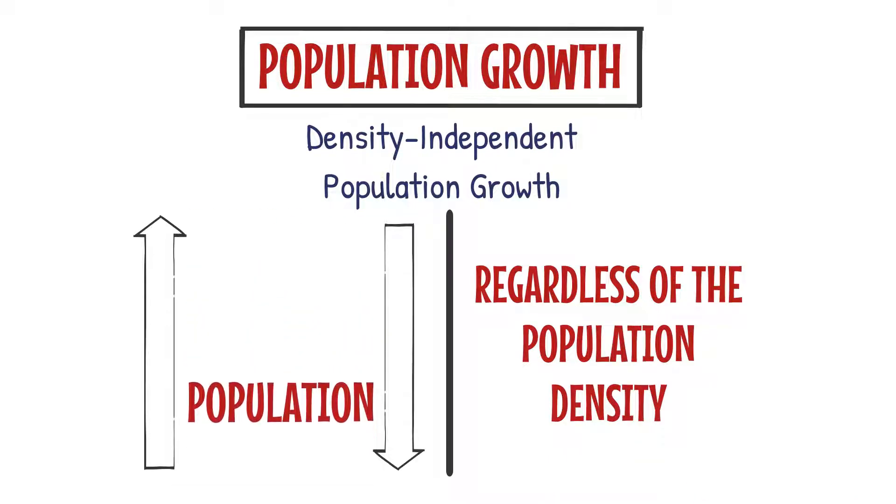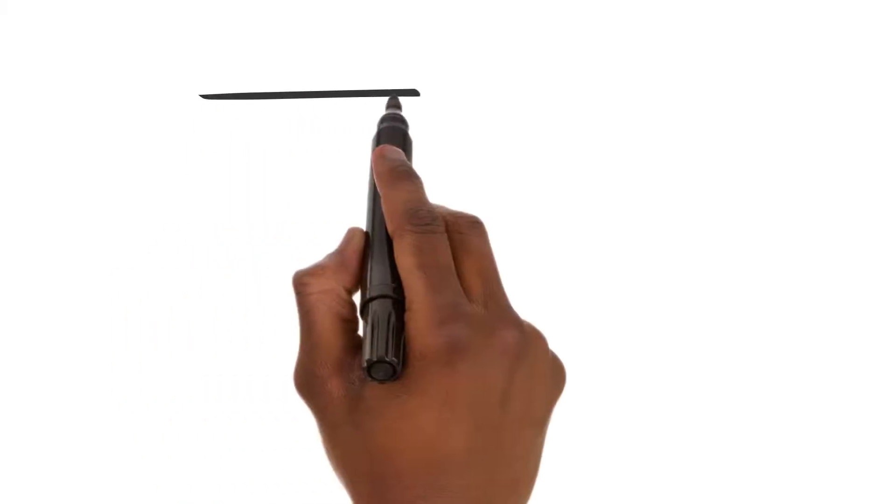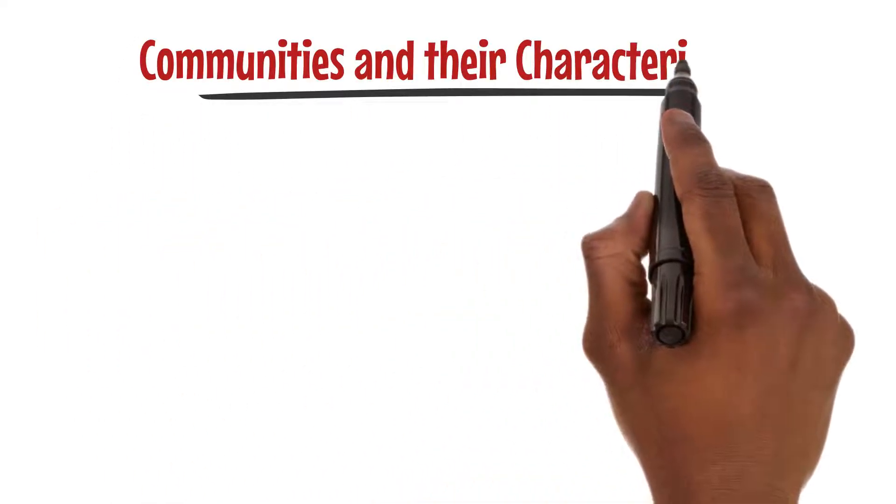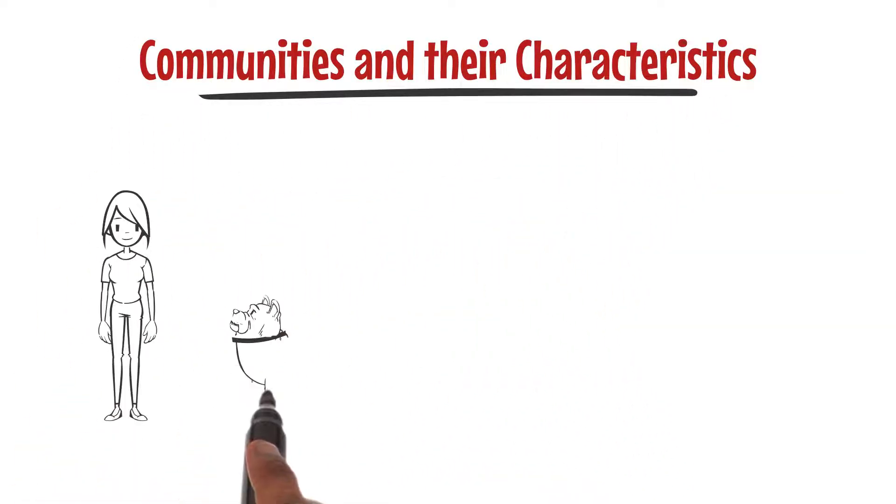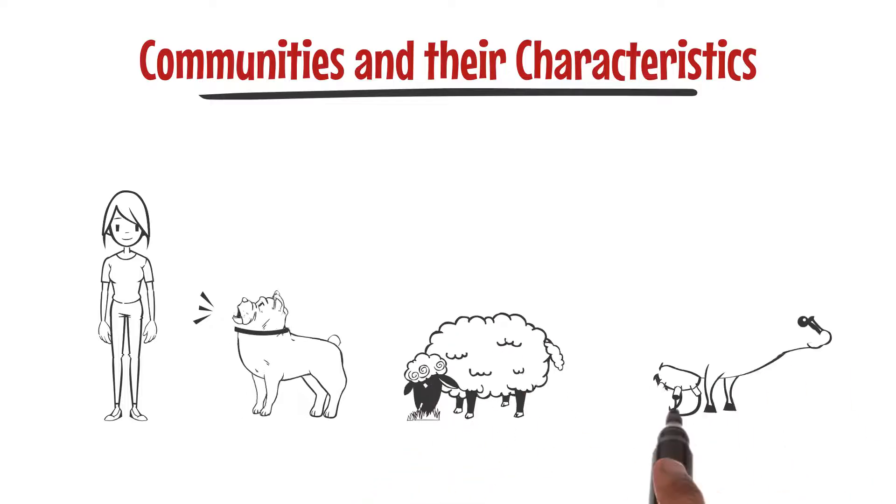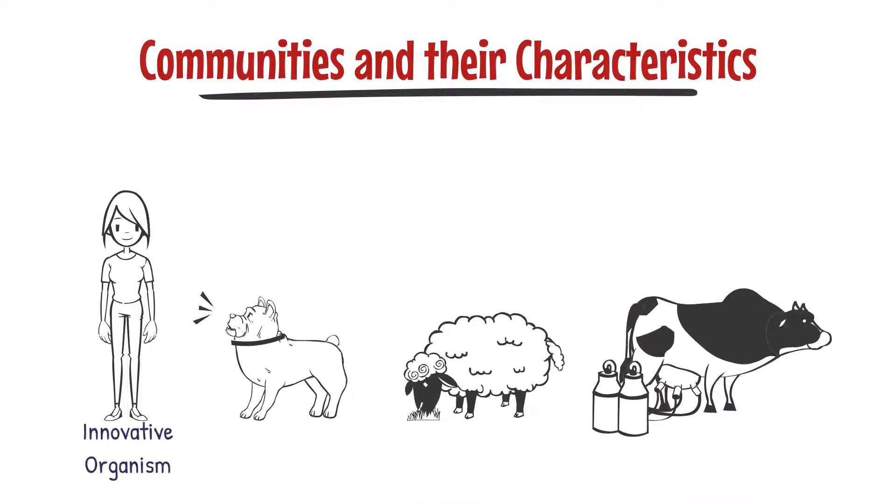Now let's shift our focus to communities and their characteristics. A biotic community is a group of different species living together and interacting with each other. It's like a bustling neighborhood where everyone has their own role to play.